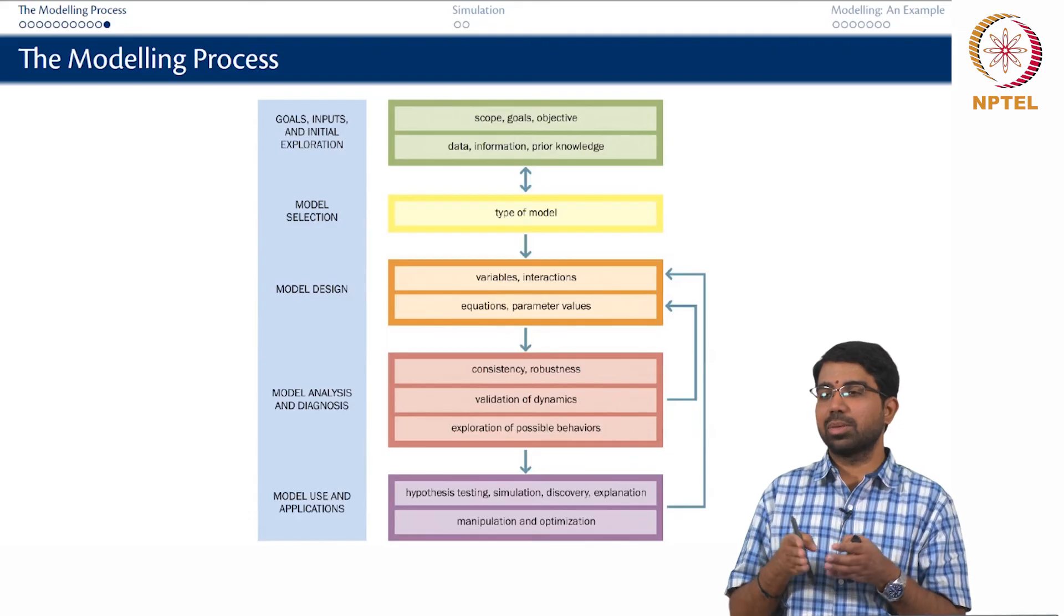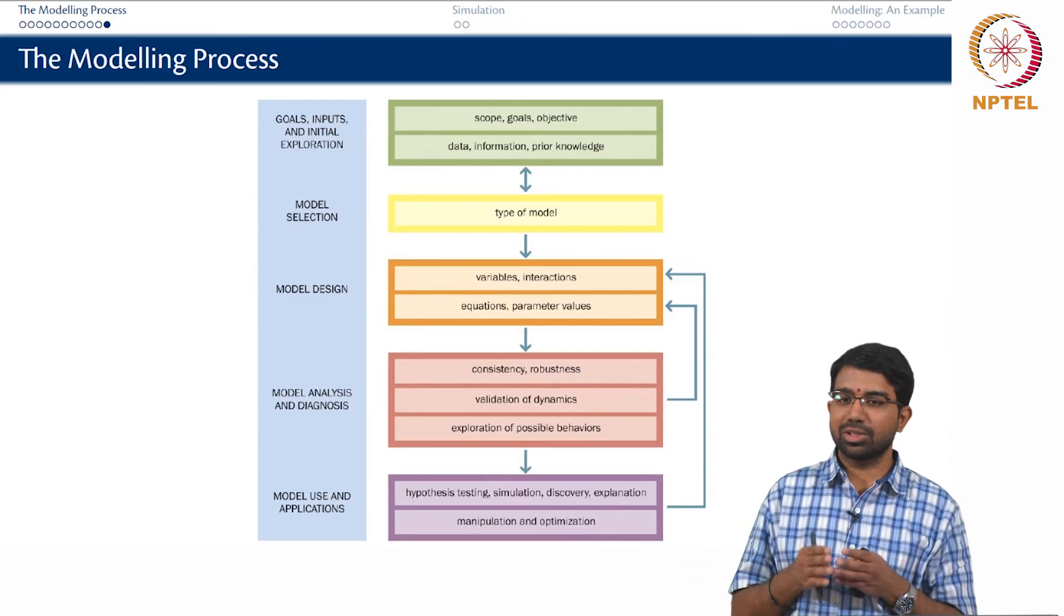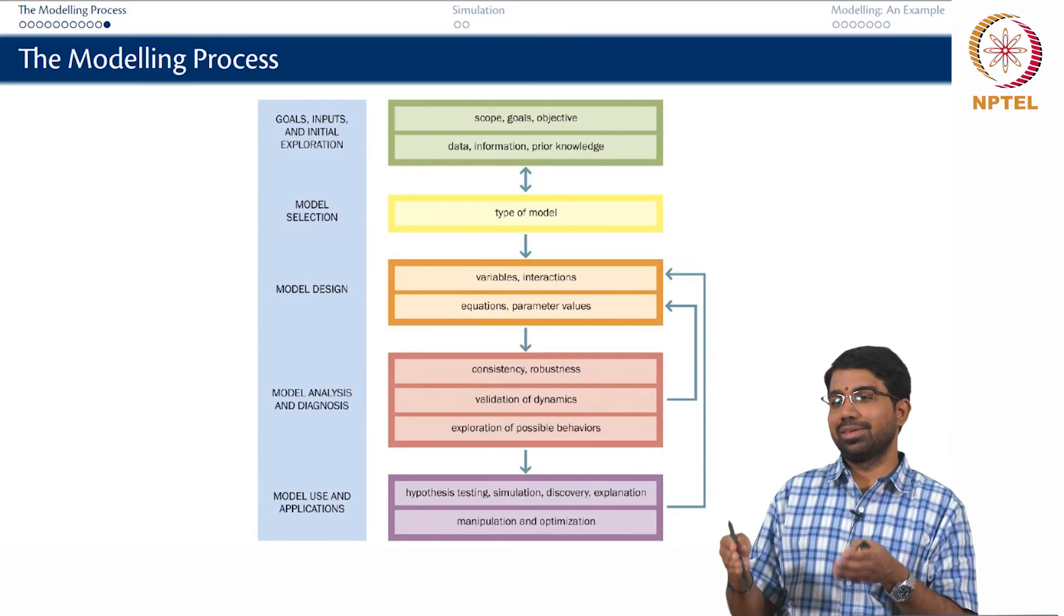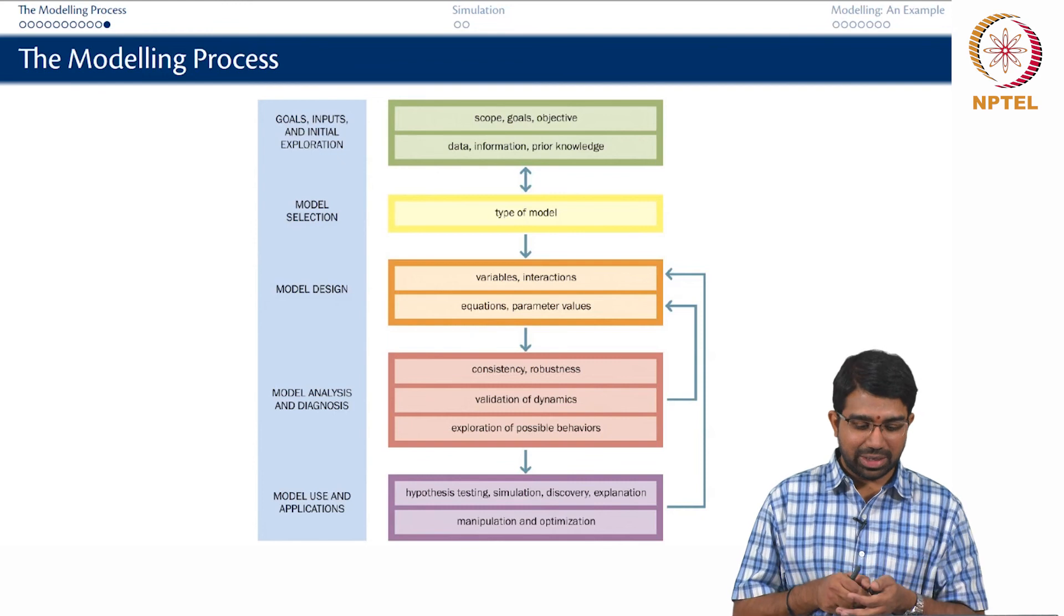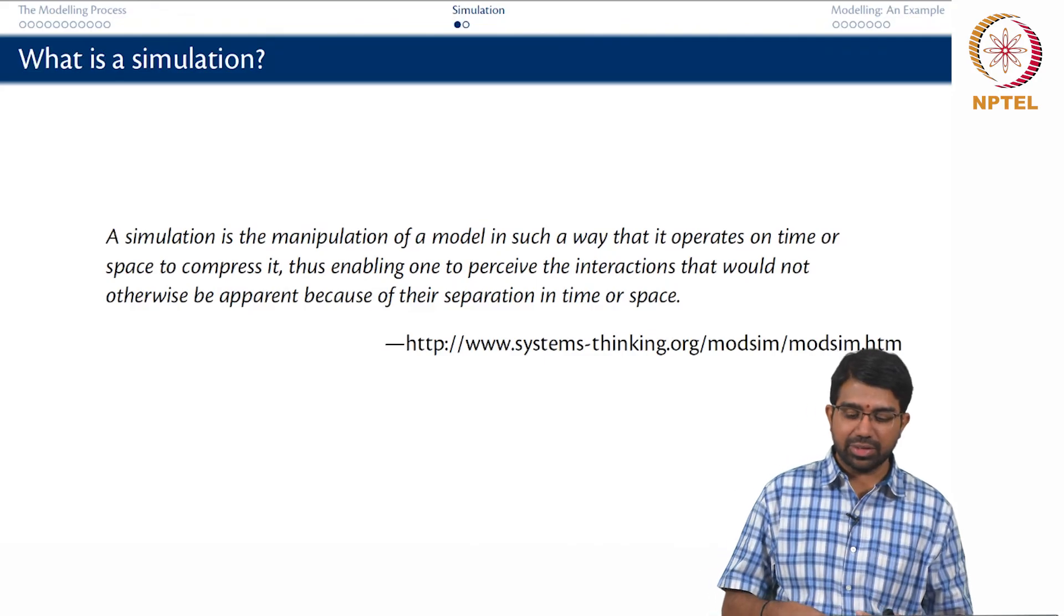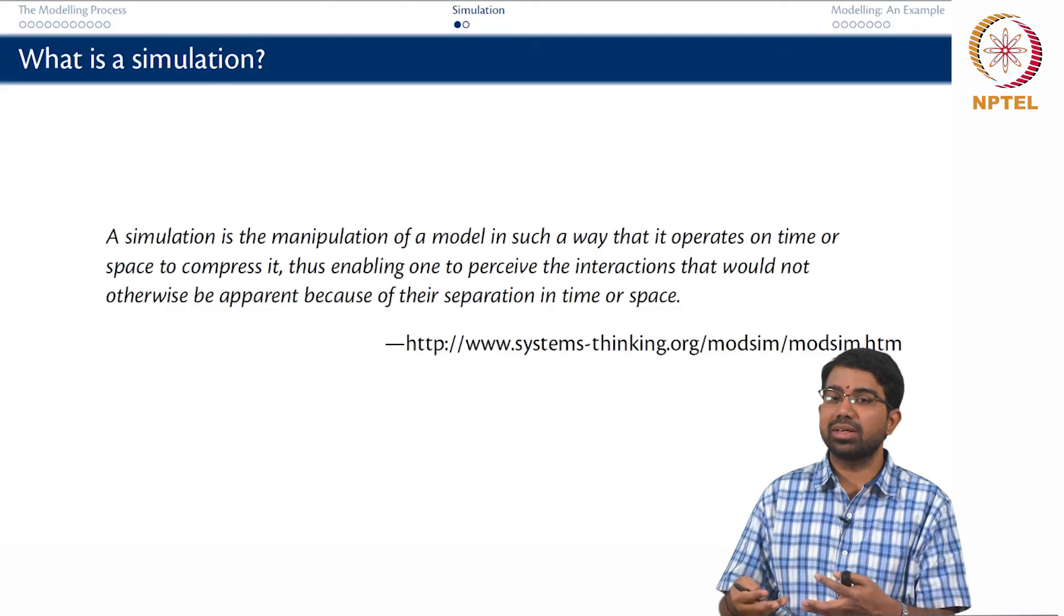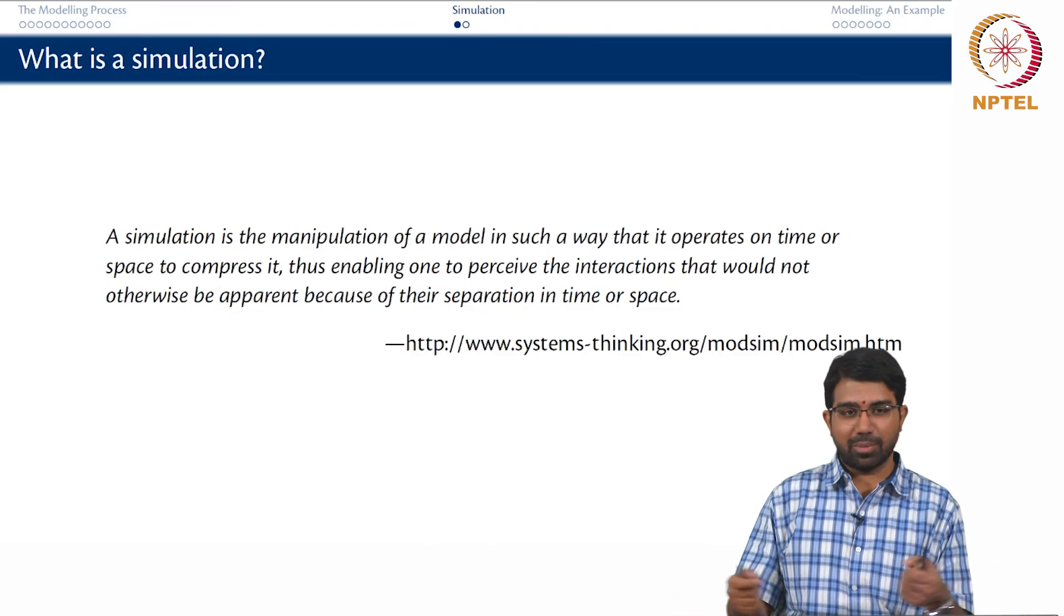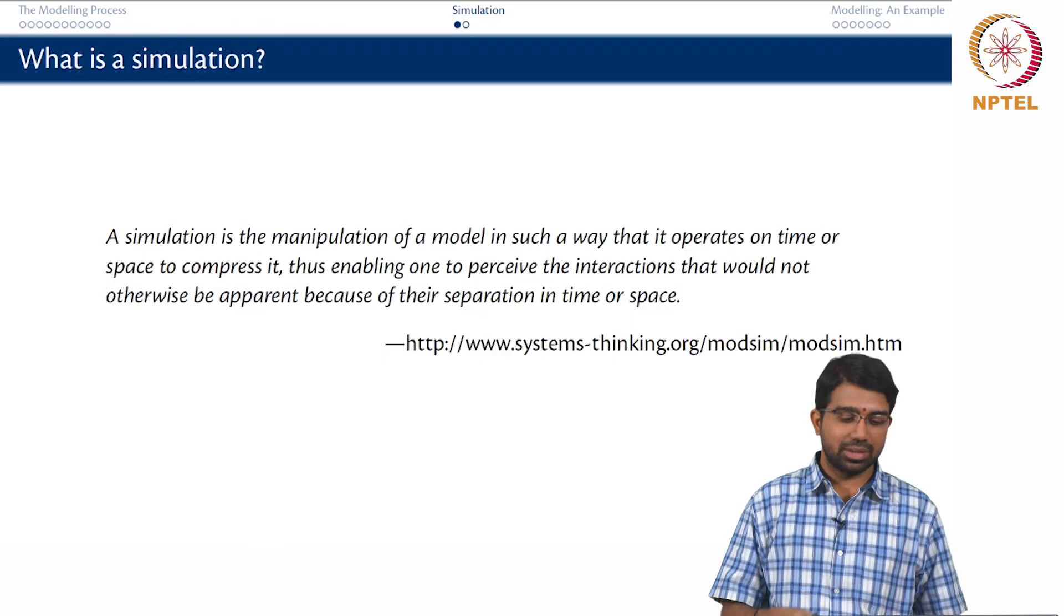The most important aspect of a simulation is that it will compress time and or space. You can talk about, see it does not take 3 hours to simulate a Michaelis-Menten system for 3 hours. So it basically can compress time and you can ask very interesting questions. So what is the simulation? It is the manipulation of a model in such a way that it operates on time or space to compress it and most importantly help us perceive interactions that were otherwise not visible. Because you have compressed it, you can actually see certain interactions that you were not able to observe otherwise.